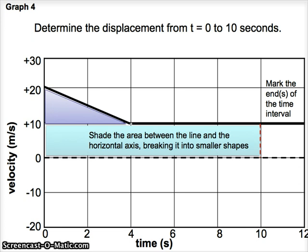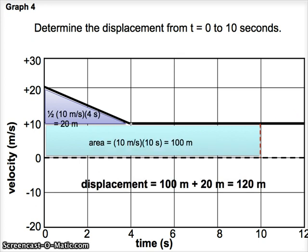Again, there are a couple different ways you could set this up. But I would work with this triangle and this rectangle. Making sure I use the scale on the axes. We find that the rectangle is 100 meters. And the purple triangle represents 20 meters. So our displacement would be 120 meters. Again, this is also the distance traveled. Because this object only moves in the positive direction.